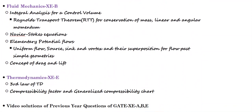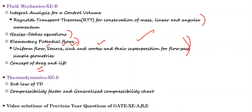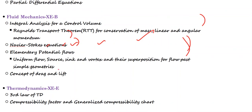Next is fluid mechanics — GATE XCB. In fluid mechanics, there are additional topics not in ME: the Reynolds Transport Theorem (RTT), Navier-Stokes theorem, and the complete elementary potential flows, such as uniform flow, source, sink, vortex, and superposition of flow past simple geometries — all those things are not in ME and will be covered in this course. Also, the concept of drag was discussed in ME, but lift was not covered. In this course, we will discuss lift.